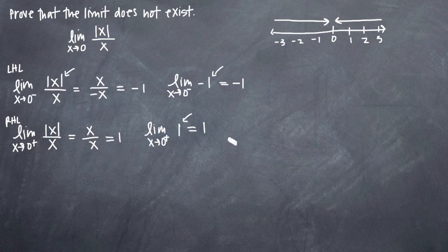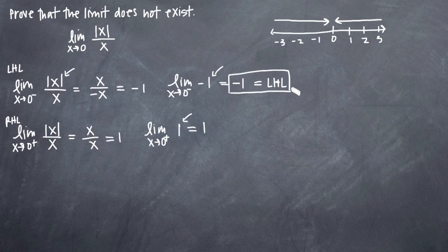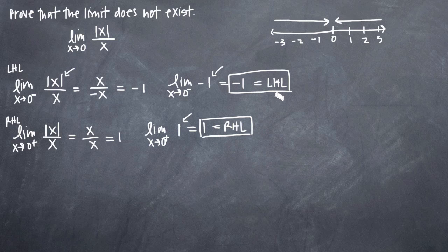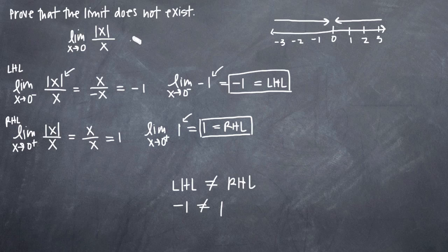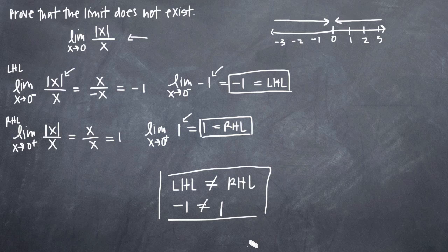The definition of a limit requires the left-hand limit exists, the right-hand limit exists, and the two are equal to one another. We've shown that we have a left-hand limit — it's negative one — and we've shown that we have a right-hand limit — it's positive one. So we've gotten two-thirds of the way through the definition. But the third piece is that the two must be equal to one another, and obviously our right-hand limit is not equal to our left-hand limit. Therefore, the limit does not exist because the left-hand limit does not equal the right-hand limit — because negative one does not equal positive one. So we've proven that the limit as x approaches zero of the absolute value of x divided by x does not exist.